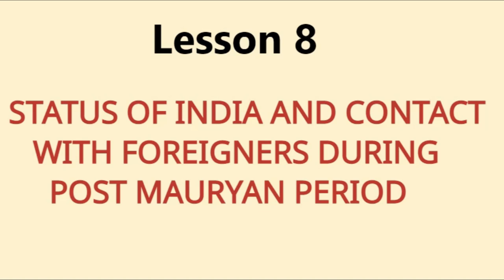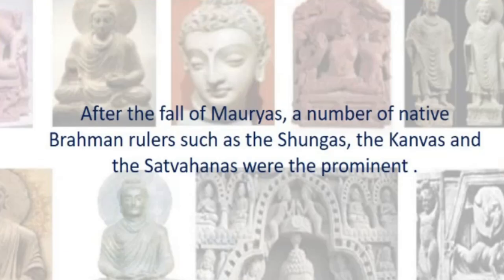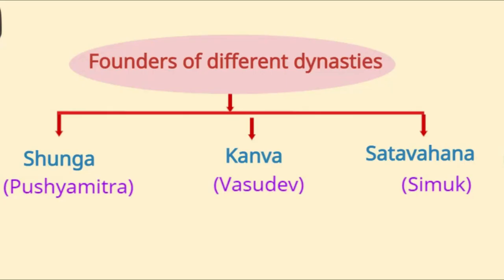Good morning children. Today we shall go through lesson 8: status of India and contact with foreigners during the post-Mauryan period. After the fall of the Mauryas, a number of native Brahman rulers such as the Shungas, the Kanvas, and the Satvahanas were prominent in India.